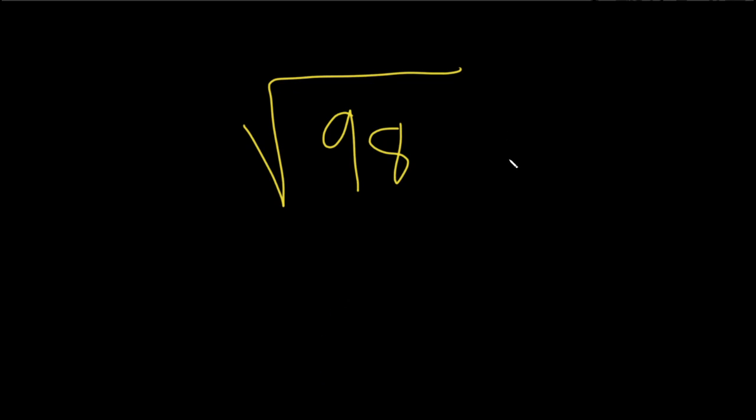In this problem we're going to simplify the square root of 98. So in order to simplify something like this, we want to factor it in a way so that we have it factored with a perfect square, because when we take the square root of a perfect square, we'll get a whole number.